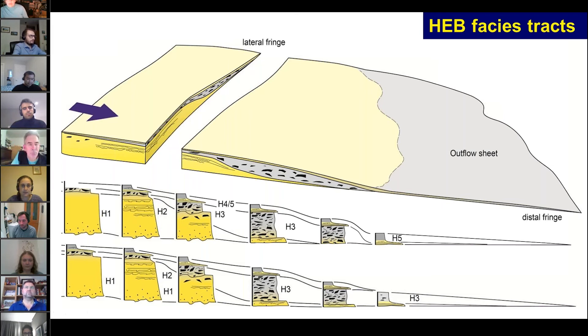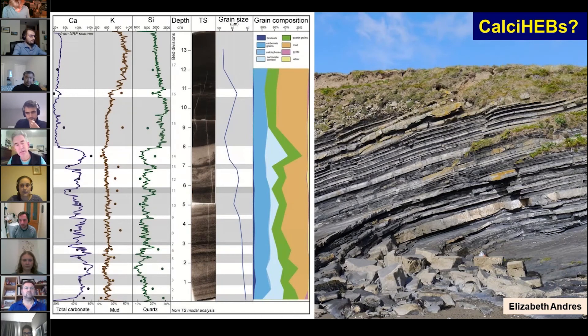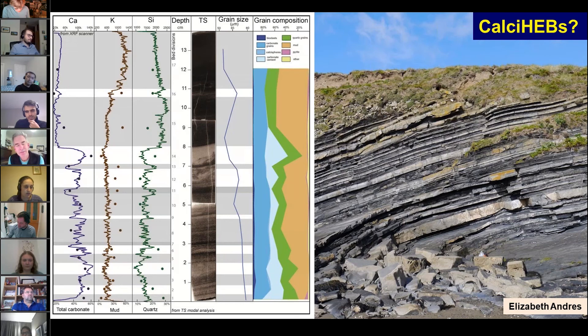The last point I want to make in terms of future work is we've been working mainly with siliciclastic systems, but there's a lot of carbonate and mixed carbonate-clastic systems out there, including a very nice system underneath the city of Dublin that we're working on. Again, XRF profiling and petrography in beds—they've always been described as calci-turbidites. But again, transitional and laminar flow components seem to be present in these. This is work done by Elizabeth Andres.